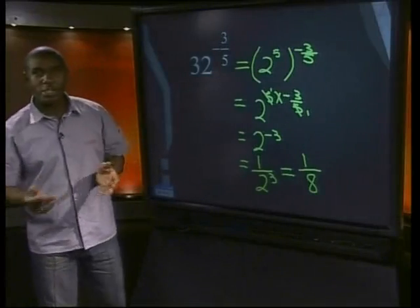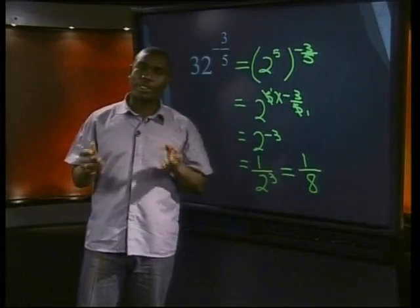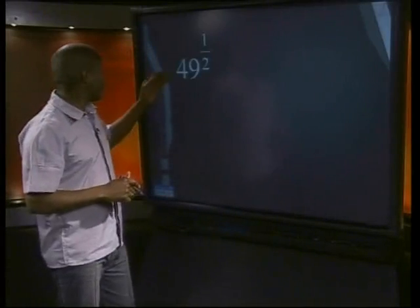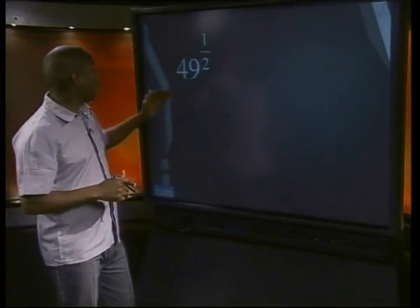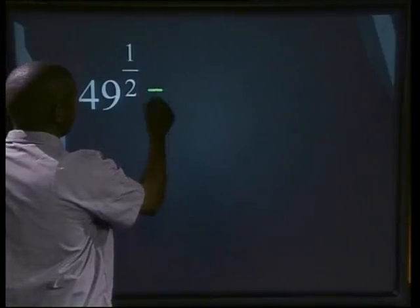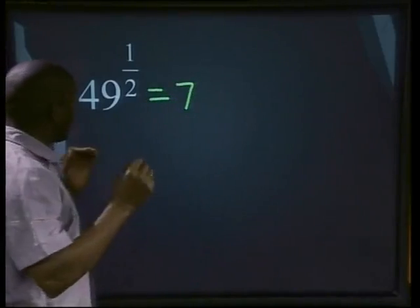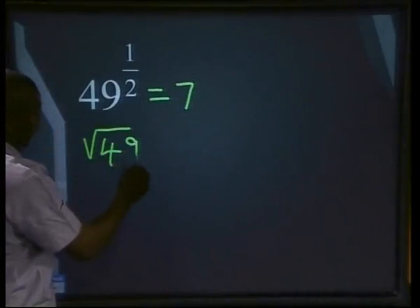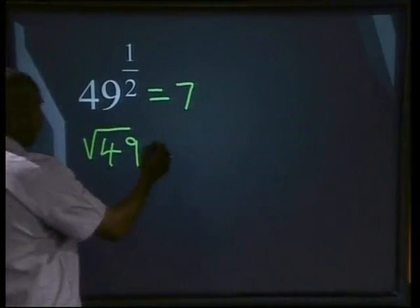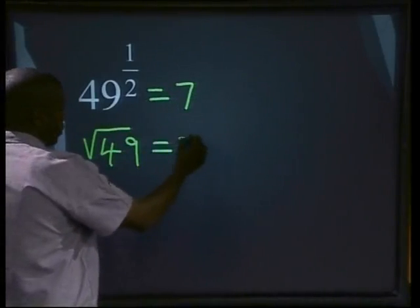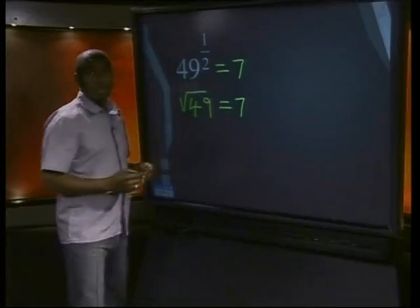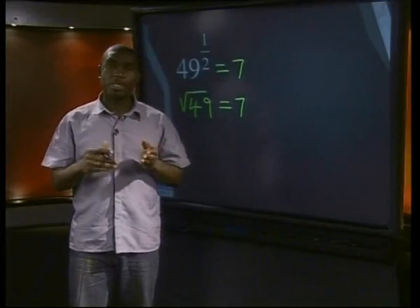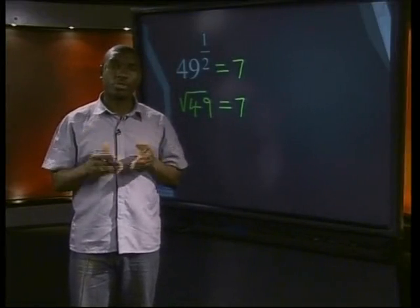All these expressions containing fractional exponents can also be written in another way. Look again at 49 to the power of 1 over 2 — we simplified that to 7. But what about the square root of 49? The square root of 49 will also be equals to 7. So we can say that the square root of 49 is the same as 49 raised to the power of 1 over 2.